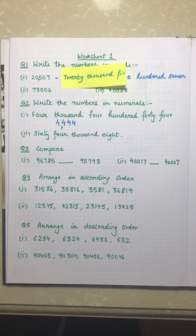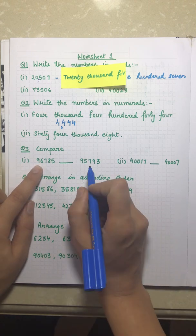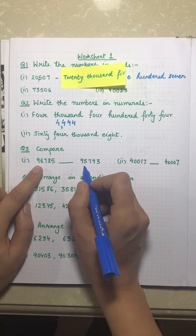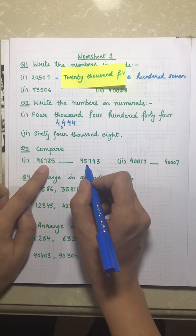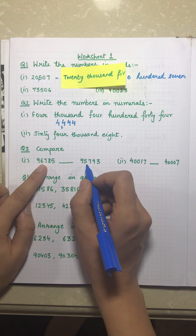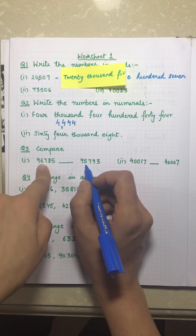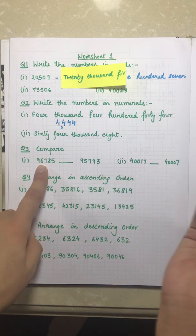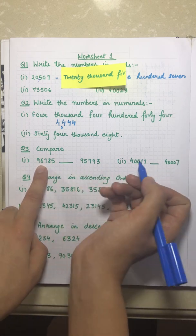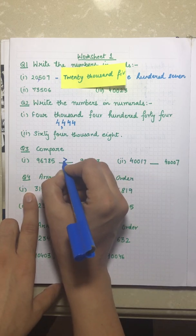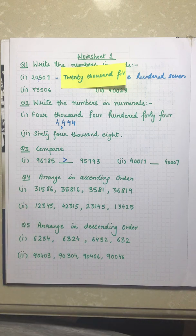The first digit is nine for both numbers — again the same. Now let's look at the ten-thousands part: this is six and this is five. Therefore ninety-six thousand is greater than ninety-five thousand, so we put a greater-than sign. It doesn't matter what the digits behind are.